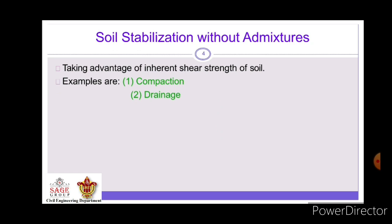Compaction means we just compact the soil with a roller or a hand compactor, and Drainage means by using drainage we compact the soil.